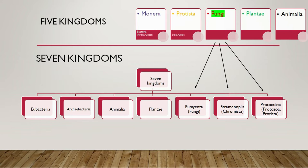Now we have seven kingdoms, because of the increase in taxonomic knowledge about organisms and characterization at the molecular level. The organisms have been reorganized and classification has been redone. It has been found necessary to create more kingdoms and group organisms properly. So in the five kingdom classification, whatever organisms we put under kingdom Fungi now need to be reclassified.